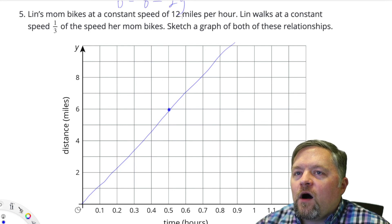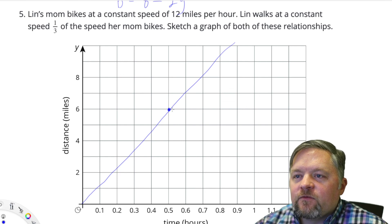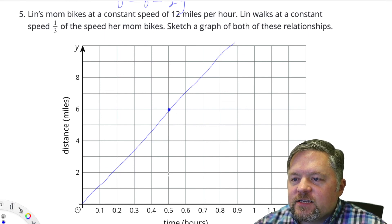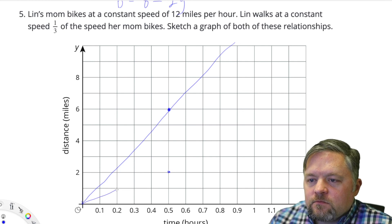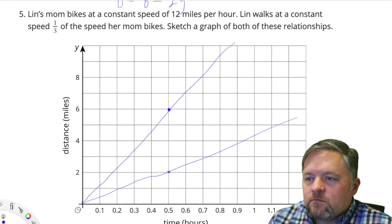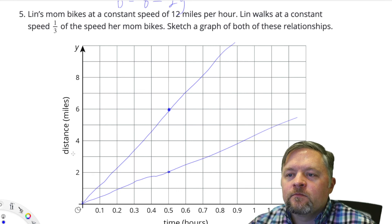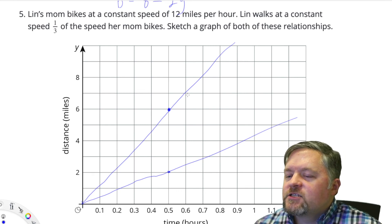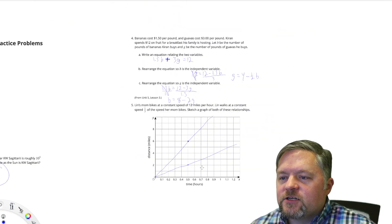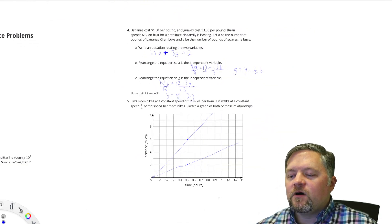Now Lynn walks at a speed one third of her mom, so in half an hour if mom goes 6, one third of 6 is 2. Sketch a graph of both of these equations. Excellent. That was the last one.